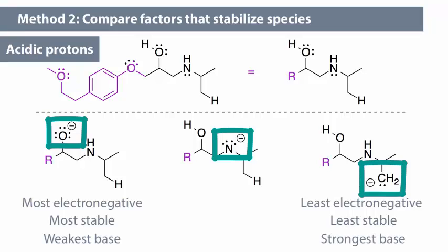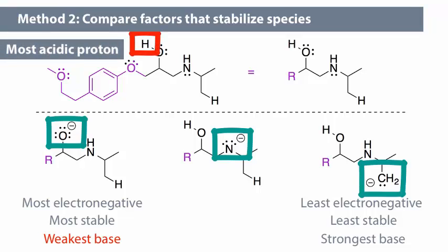The stronger the acid, the weaker its conjugate base, and vice versa. Because the weakest base is the alkoxide, the hydroxyl proton is the most acidic in this group. Notice that we came to the same conclusion using the pKa method, and we should. Otherwise, we would know that we had made a mistake somewhere.